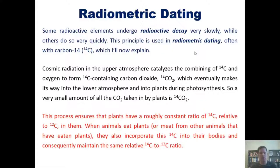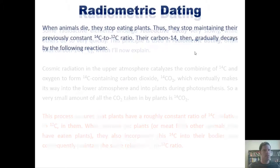This C14O2 eventually makes its way down into the lower atmosphere and into plants during their photosynthesis. So a very small amount of the CO2 taken in by plants is C14O2. This process ensures that plants have a roughly constant ratio of C14 relative to C12 in them, C12 being the more common isotope of carbon in the biosphere.